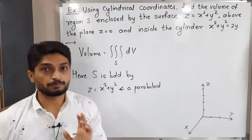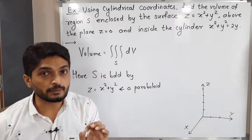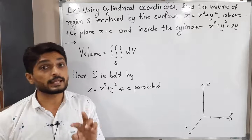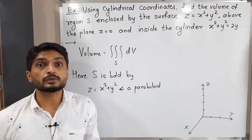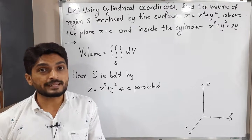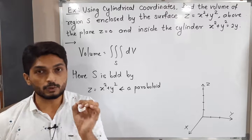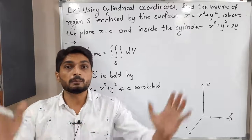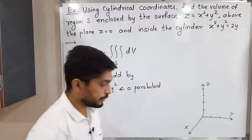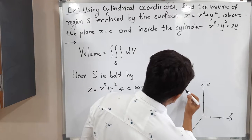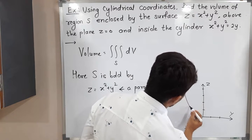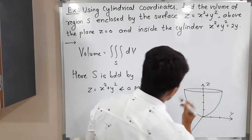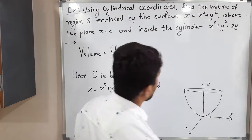I will put z = 0: then 0 = x² + y², which means x and y will both be zero. So this paraboloid passes through the origin (0, 0, 0). Let me draw a rough sketch — the paraboloid is around the z-axis, opens upward, and passes through the origin, like this.